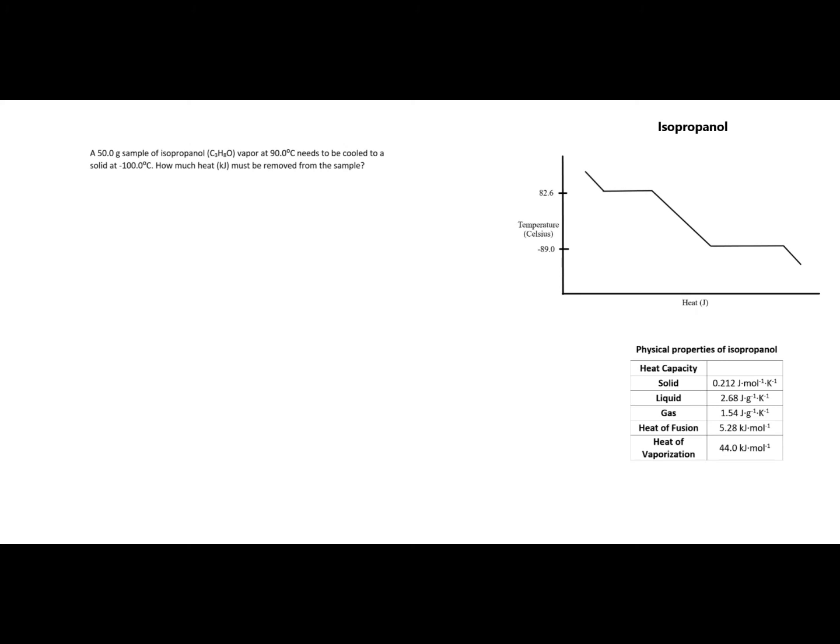Over on the right we have our heating curve, which actually in this case would be more appropriate to call a cooling curve. On the y-axis we have temperature measured in Celsius. On the x-axis we have heat, so as we move from left to right on the x-axis we are actually removing heat in this case.